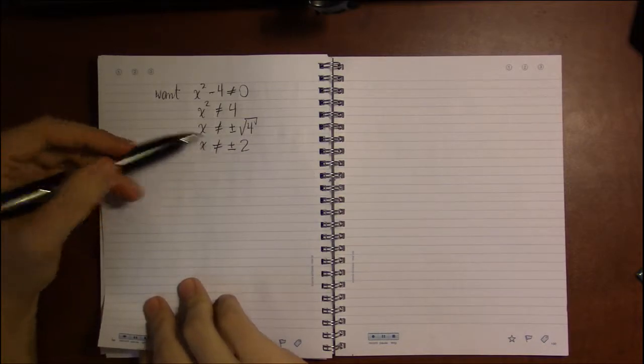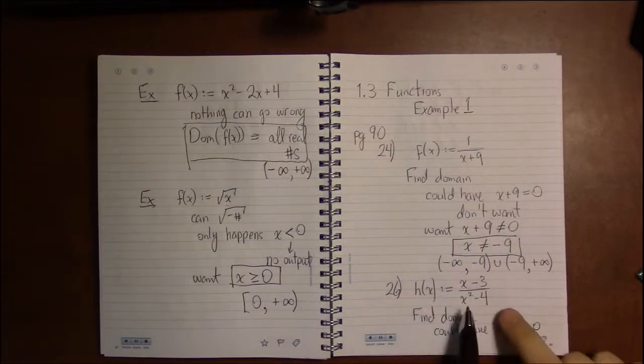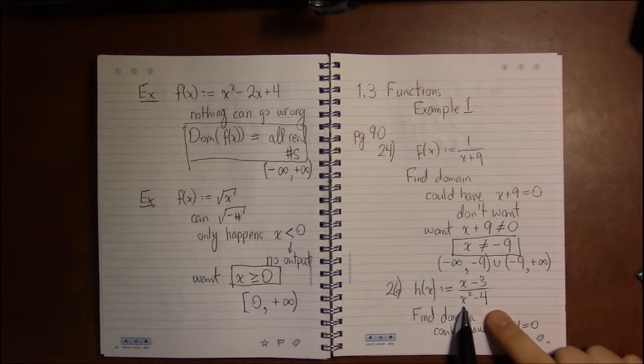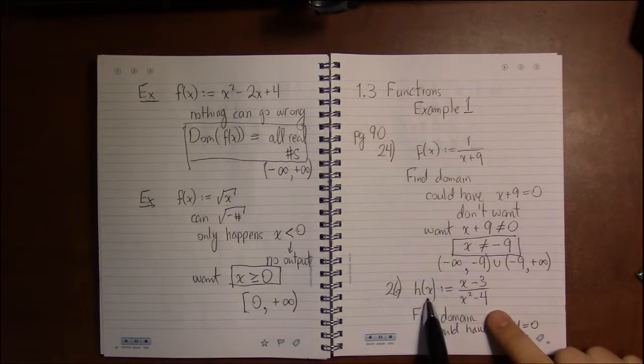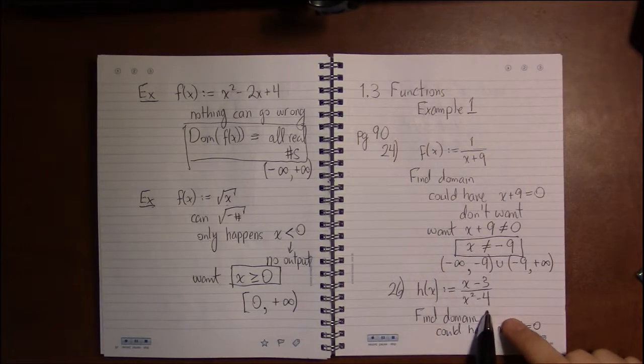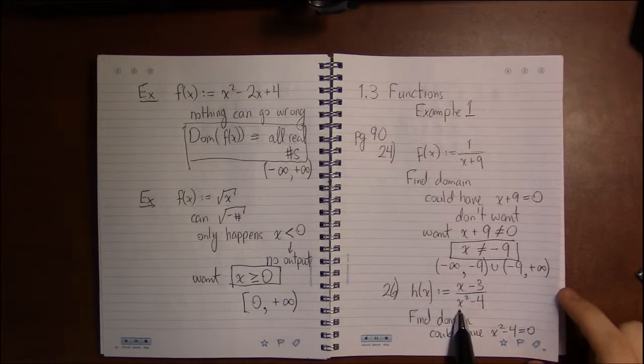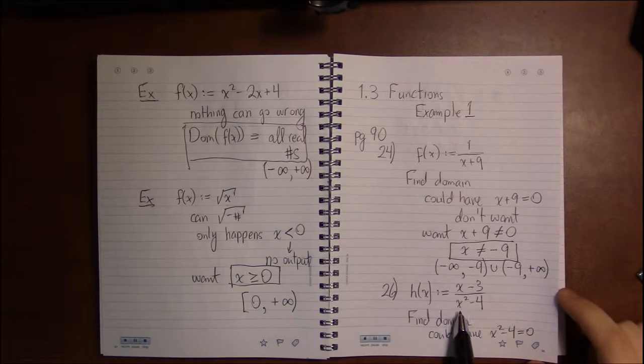So long as x is not plus or minus 2, everything's going to work out in this function. I plug in that value of x, I'll get a number out, so long as x is not 2 or minus 2.